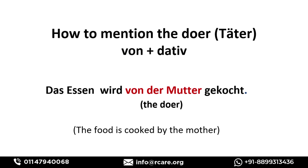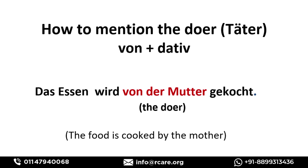You can always make passive sentences with other verbs using the same structure — only the verbs change, everything else remains the same. Now let's learn how to mention the doer, called 'Täter' in German. It is always your choice whether to mention the doer. If you wish to, use the preposition 'von' plus a dative noun. For example: 'Das Essen wird von der Mutter gekocht' — 'The food is cooked by the mother.' Whatever the doer is, it takes 'von' and is converted into dative case.